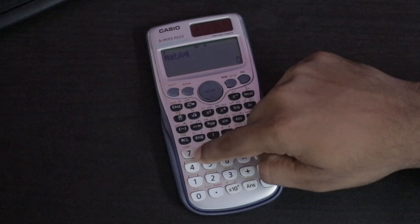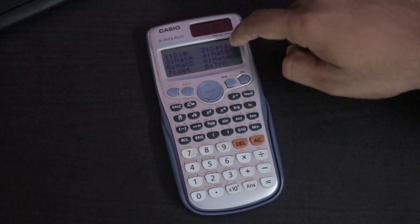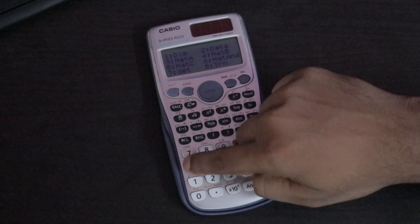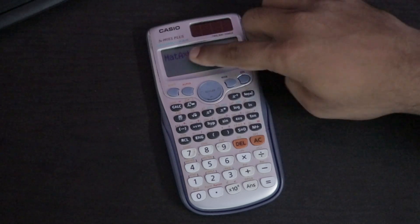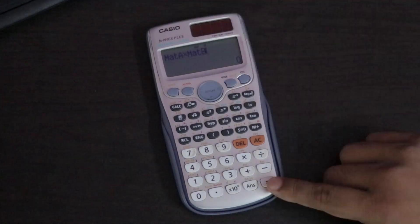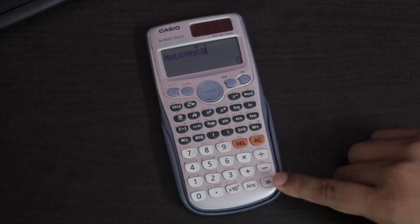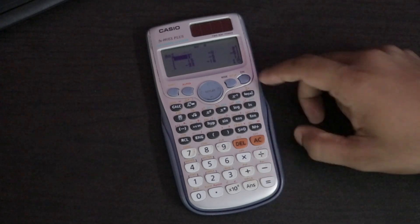For that shift, matrix, and matrix B is the fourth option. Then here we are multiplying these two matrices. Multiplying matrix A and matrix B. Then click on equal to. Here is your answer.